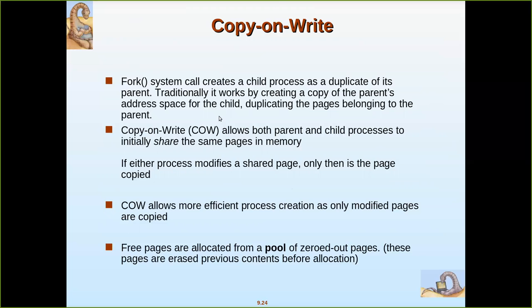The fork system call creates a child process as a duplicate of its parent. Traditionally, it works by creating a copy of the parent's address space for the child, duplicating the pages belonging to the parent. There is another method called copy-on-write. It allows both parent and child process to initially share the same pages in memory once fork creates them. If either process modifies a shared page, only then is the page copied.